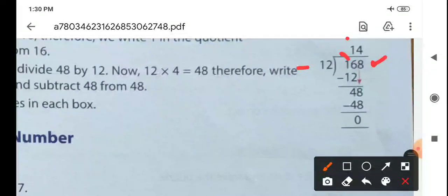12 times 1 is 12. So 16 minus 12 is 4. Then bring down 8, so we get 48.